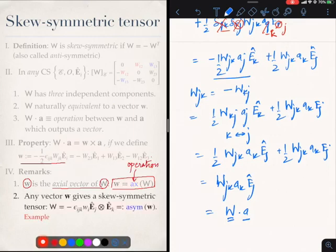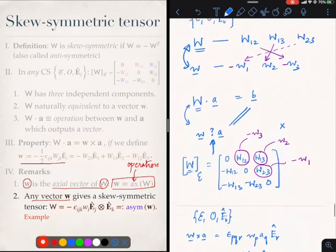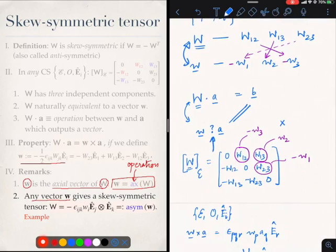The other thing is that if I give you any vector w, small w, then by relating the components of small w to the components through this kind of mapping, I can create a skew-symmetric tensor. And the components of the skew-symmetric tensor will be given by this formula. And this skew-symmetric tensor is called the asym of w, the anti-symmetric tensor associated with small w. So that is also an operation, this asym.